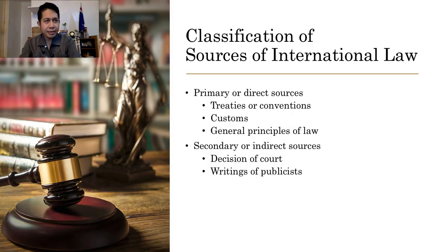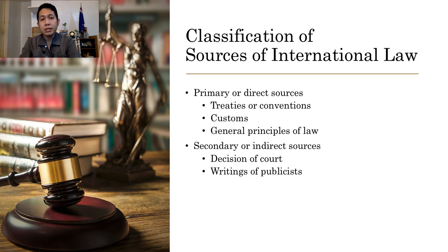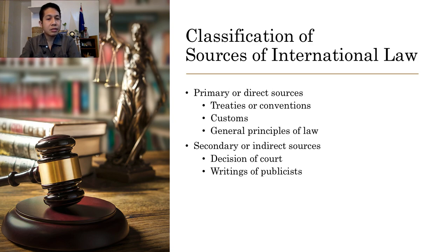Basically, sources of international law are classified into two. First, primary or direct sources, which are composed of treaties or conventions, customs, and general principles of law. Second, secondary or indirect sources, consisting of decisions of courts and writings of publicists.